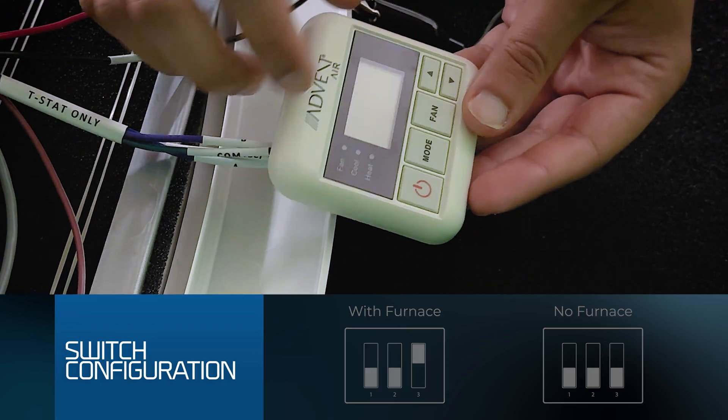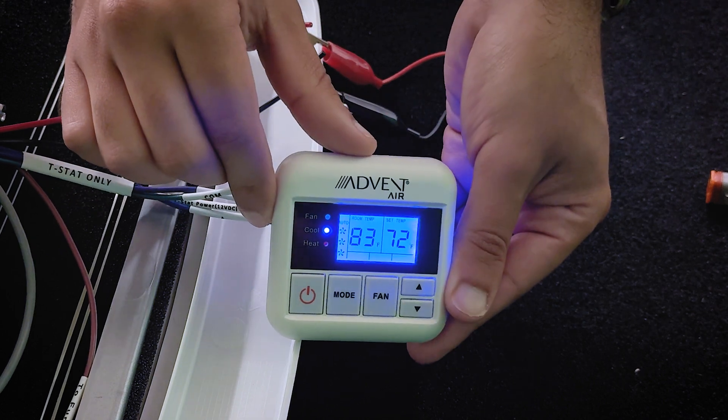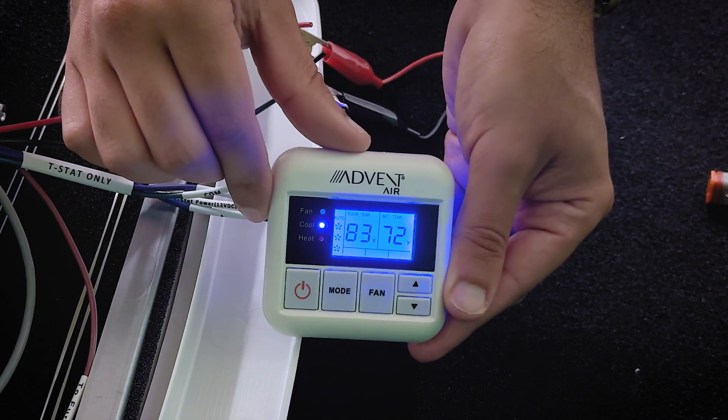We can go ahead and turn the thermostat over and power it up by pressing and holding the power button. Here you can see that it is powered up and we do have a room temp.